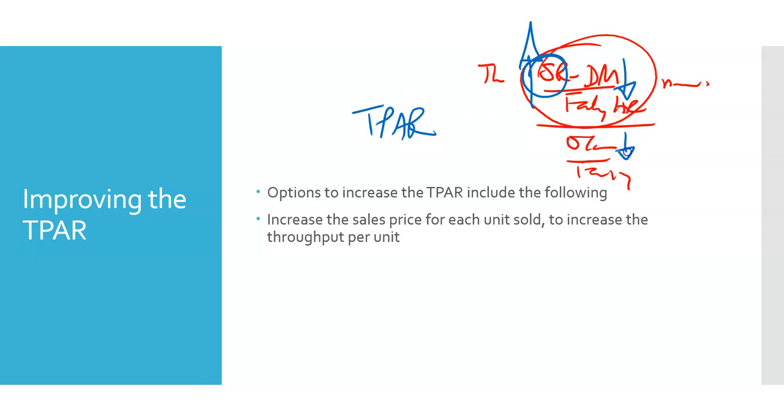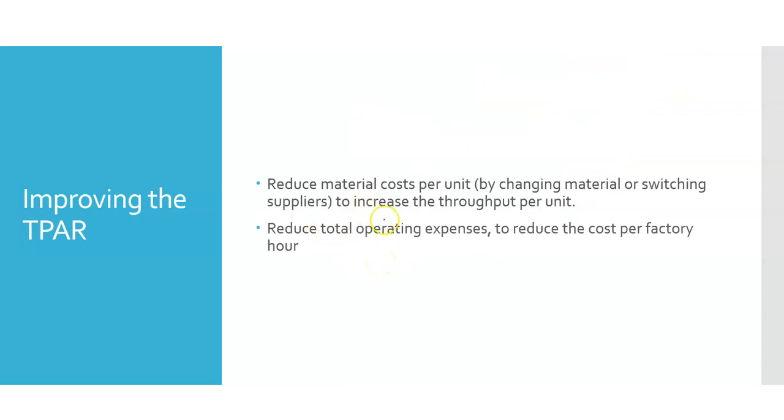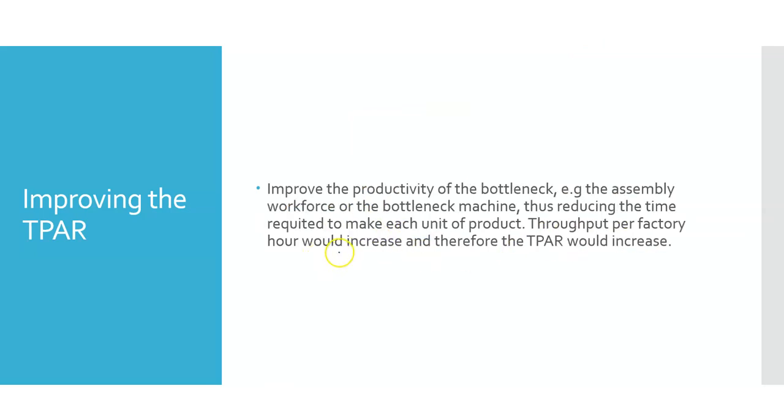Anything I can do to reduce my operating costs is great. So those are my three signals. Can I increase my sales revenue? Can I reduce my direct materials? Can I reduce my operating costs? You will have an increase in your TPAR. That's what I highlight over here. Increase the sales price for each unit sold to increase the throughput per unit. Reduce material costs. Reduce operating costs to reduce the total cost.